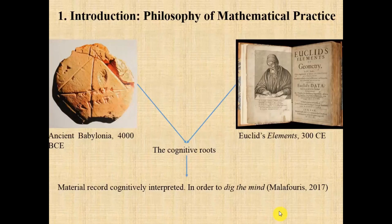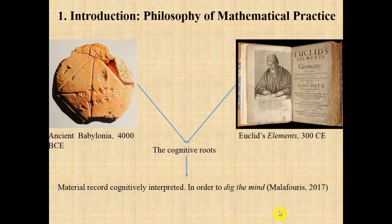These three aspects lead me to search for the archaeology of geometry, understanding mathematics as something that has evolved in time since its first manifestation until sophisticated mathematical results such as Babylonian mathematics or Euclid's Elements. My main interest is in the cognitive roots of this geometric knowledge — that is, what kinds of human actions led to the emergence and development of this body of knowledge. My main assumption is that these cognitive roots can be found in the material record. As Malafouris expresses it: if we want to dig the mind, we have to take into account the material record cognitively interpreted.